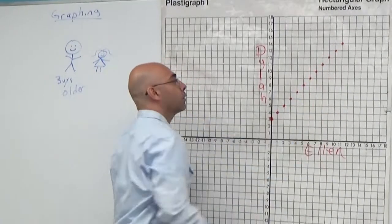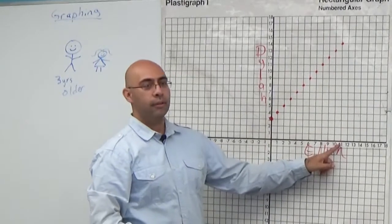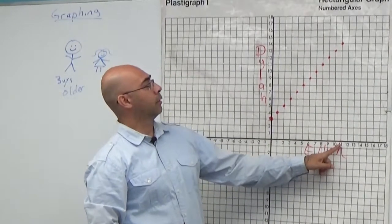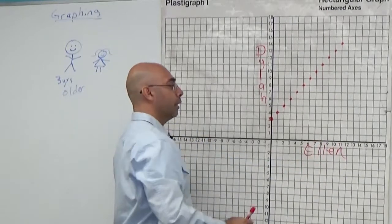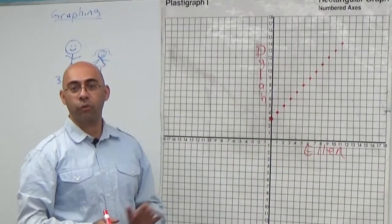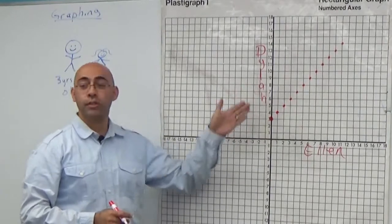How old is one of these? So when Ellen is 11, how old would Dylan be? Fourteen. Yeah, you could do eleven plus three to add it, or you could just use this graph now.